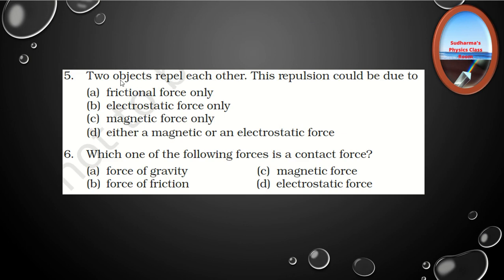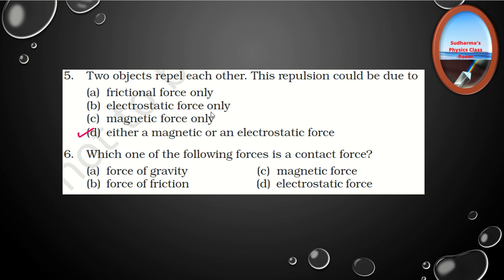Question 5: Two objects repel each other. This repulsion could be due to: frictional force only, electrostatic force only, magnetic force only, or either a magnetic or an electrostatic force. Force of repulsion occurs in two types: magnetic force, where like poles repel, and electrostatic force, where similar charges repel each other. So when repulsion is taking place, it can be because of magnetic force or electrostatic force — the correct answer is option D.